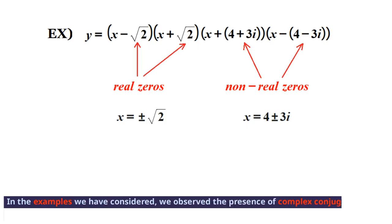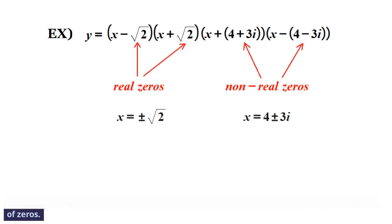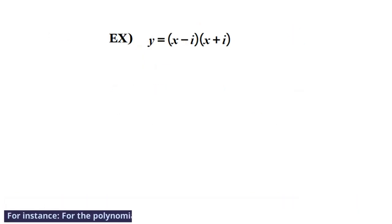In the examples we have considered, we observed the presence of complex conjugate pairs of zeros. For instance, for the polynomial function y equals (x minus i)(x plus i).